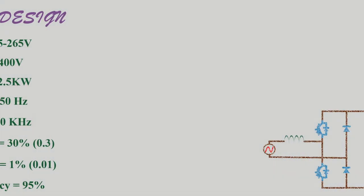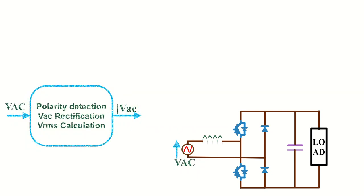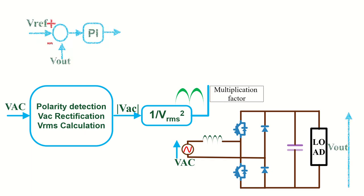Now we will explain the closed loop control scheme of the totem pole PFC converter. First need to sense the AC input voltage. From that we need to have a mechanism to detect the polarity of the voltage. Also need to find the absolute value of the voltage and its RMS value. Absolute value of the voltage is divided by square of the RMS value to find the multiplication factor. Now find the error between actual output voltage with the reference voltage and give to a PI controller. Output of the pi controller is multiplied with the multiplication factor to find the current reference.